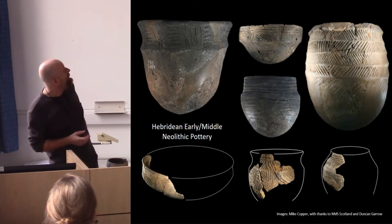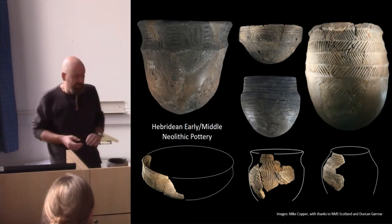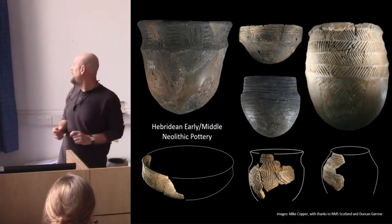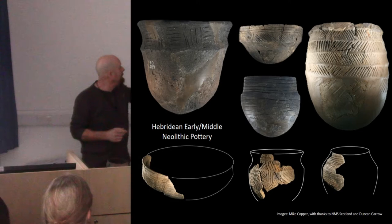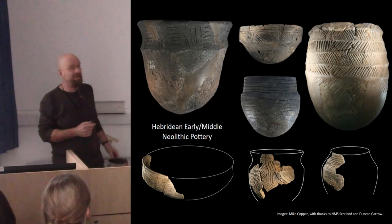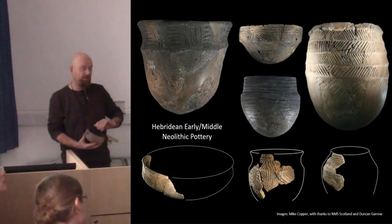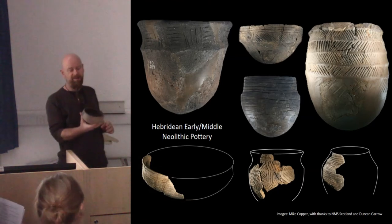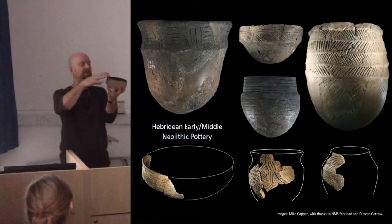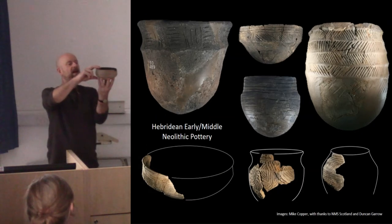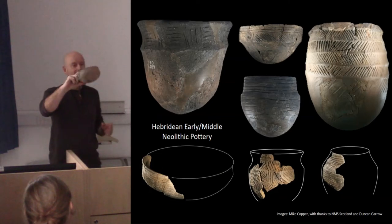I'm going to be using Hebridean Neolithic pottery, which is the subject of my PhD, to talk about this a little bit, and in particular the pots at the centre — or at least that particular category of artefact known as an Unstan bowl, or Unstan-type bowl as I tend to call them, because there are variations within this. But it's the lack of variation overall which really intrigues me.